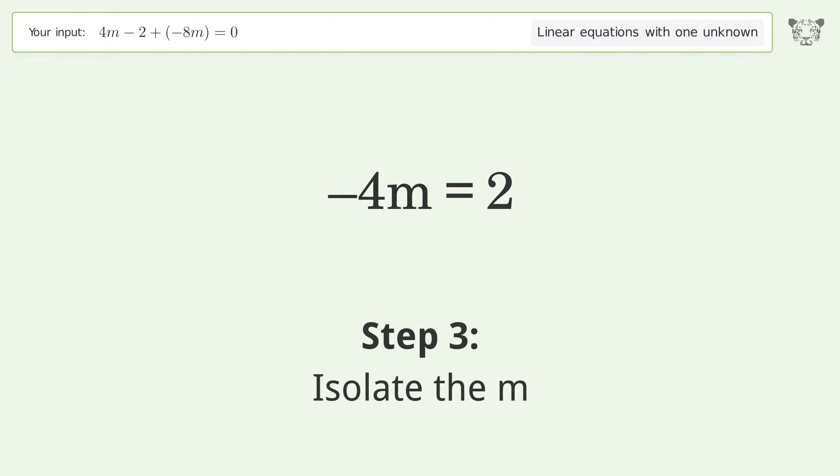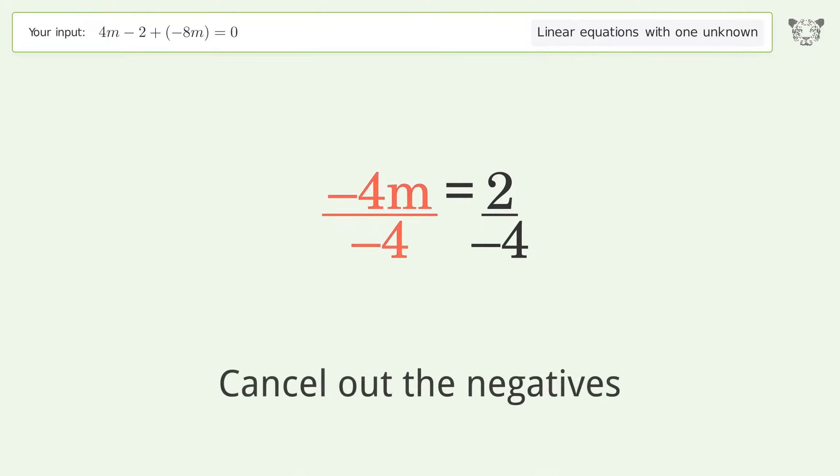Isolate the m. Divide both sides by negative 4. Cancel out the negatives.